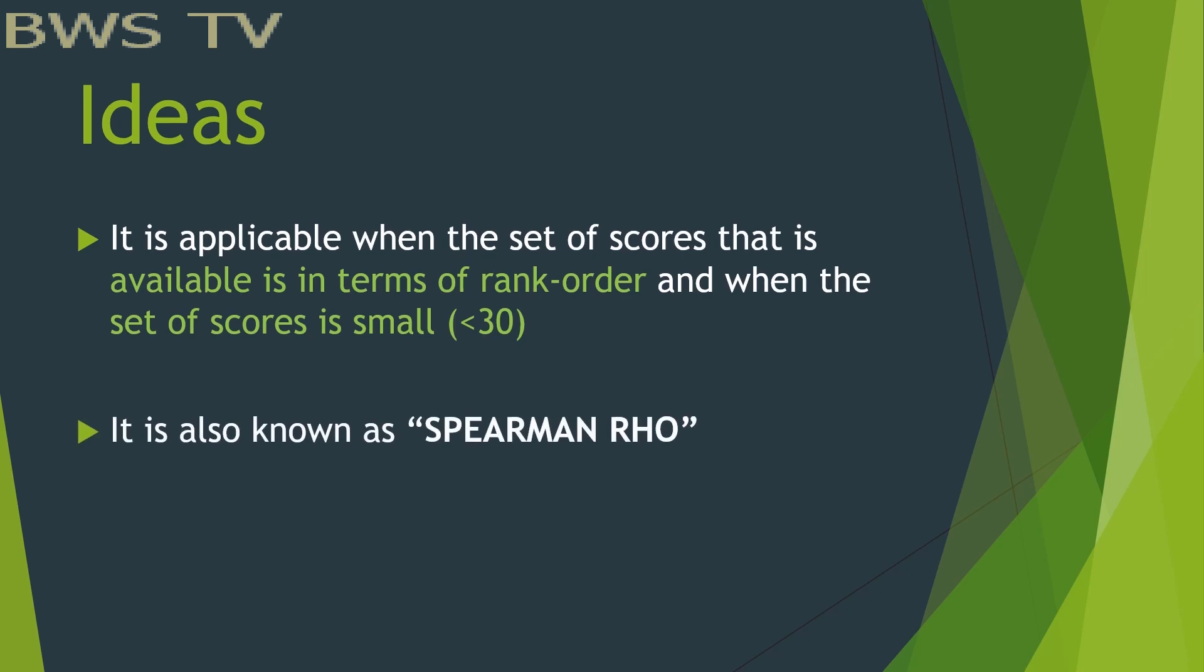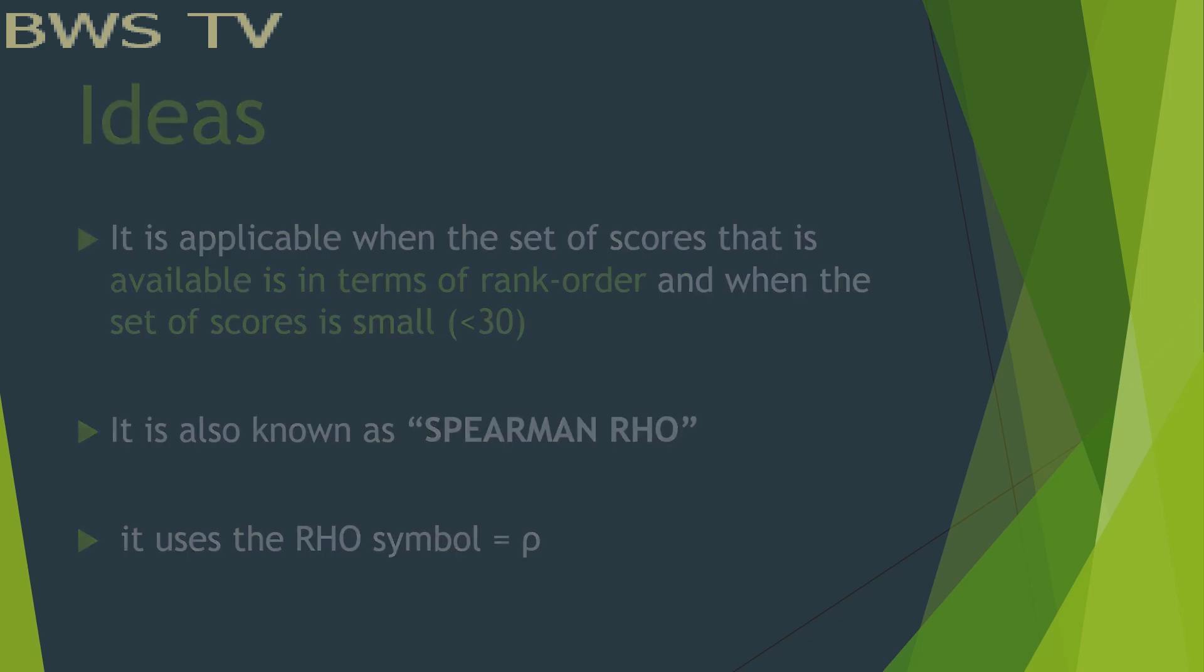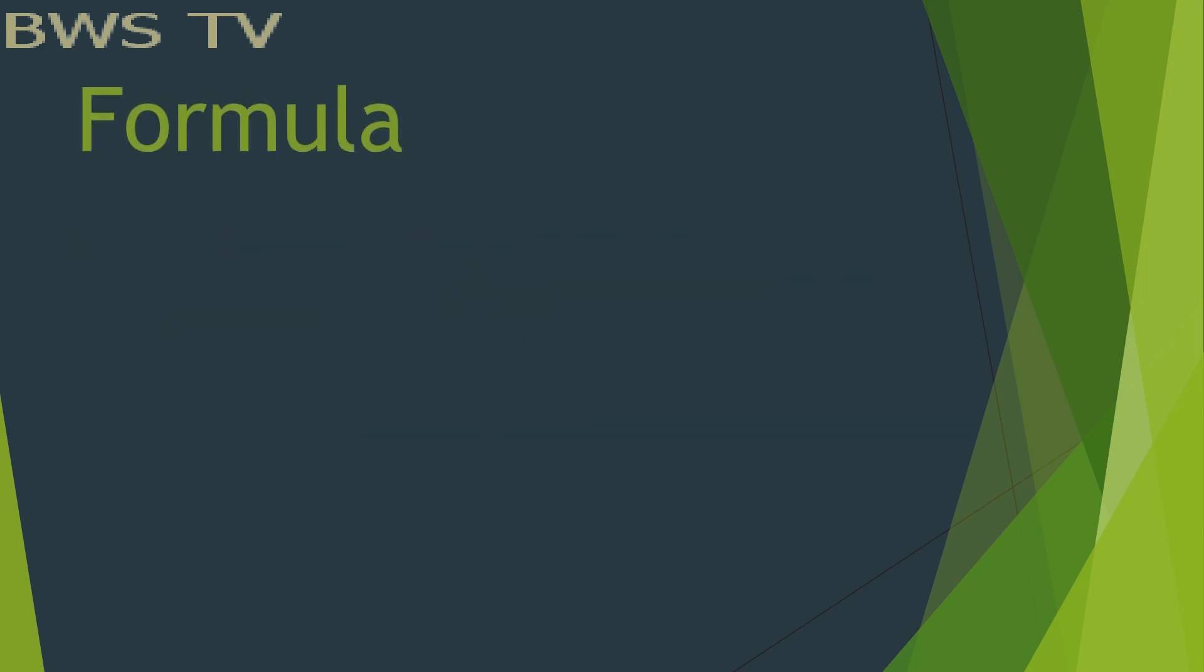It is also known as Spearman Rho, and it uses the rho symbol. Its main formula is rho equals 1 minus 6 times the summation of d squared over n times n squared minus 1.